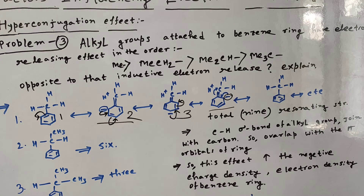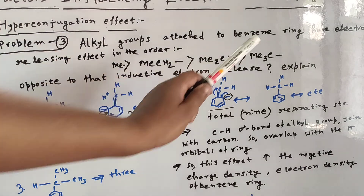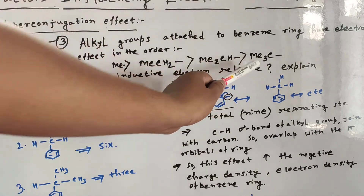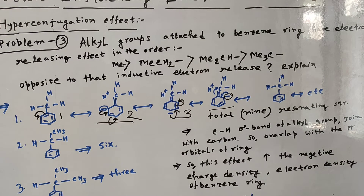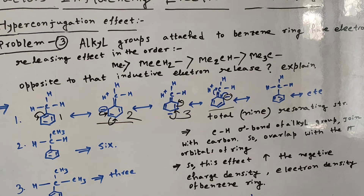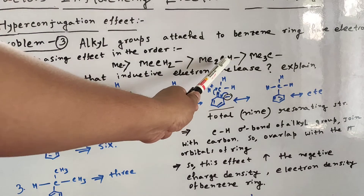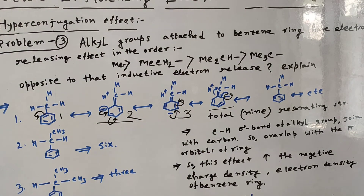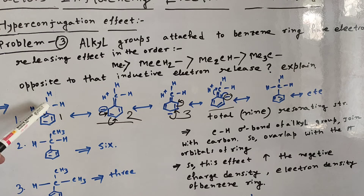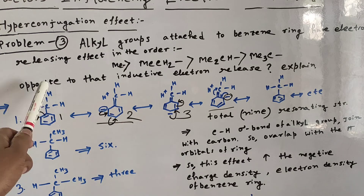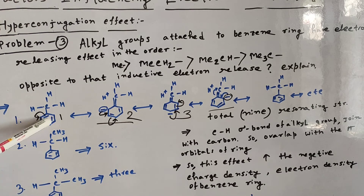So the order based on hyperconjugation is: nine structures first (methyl), then six (ethyl), then three (isopropyl), then zero (tert-butyl). This gives the stability order for electron-releasing effect via hyperconjugation. However, in the case of inductive effect, the order is exactly opposite, because for inductive effect only the +I effect is counted, where the C-H sigma bond directly participates in the delocalization of the ring.